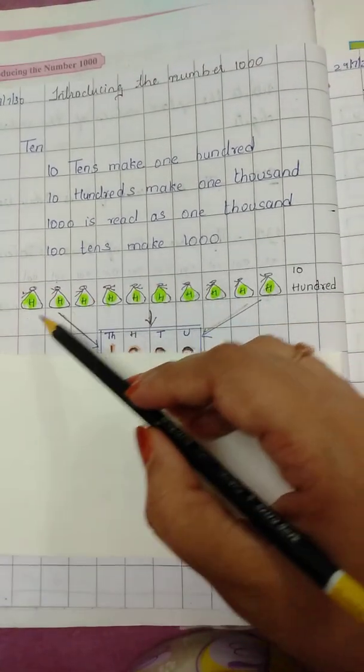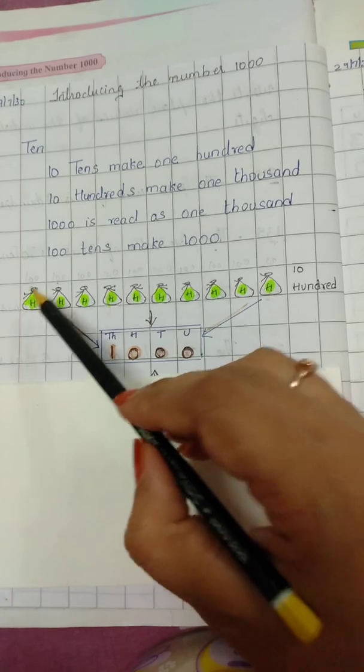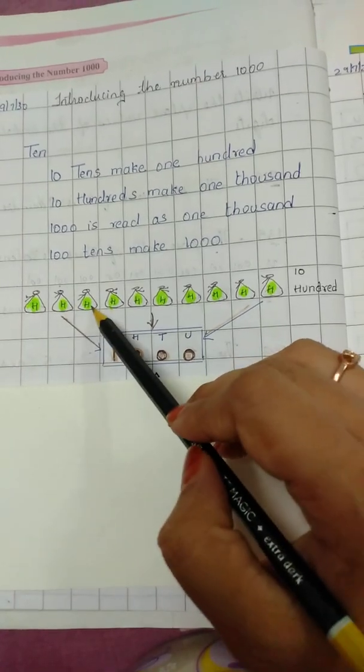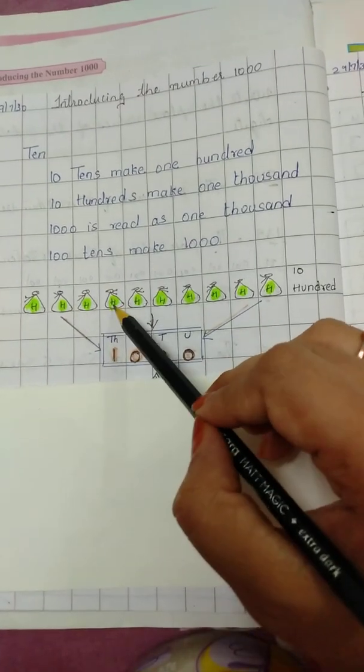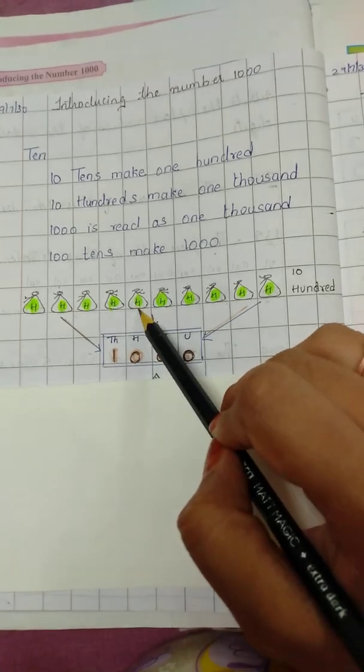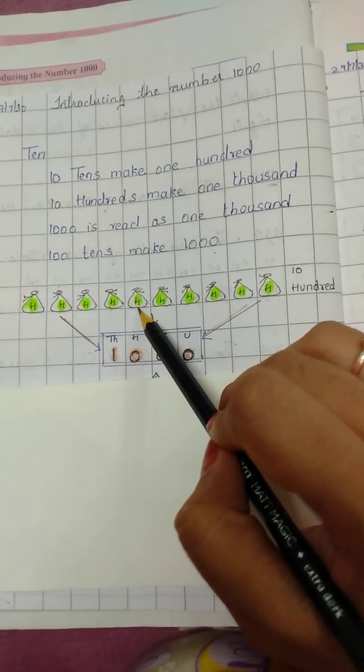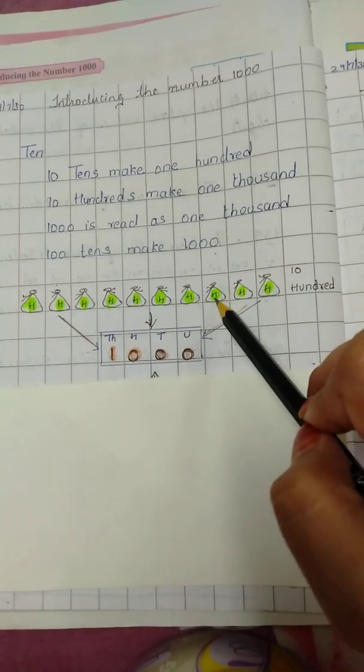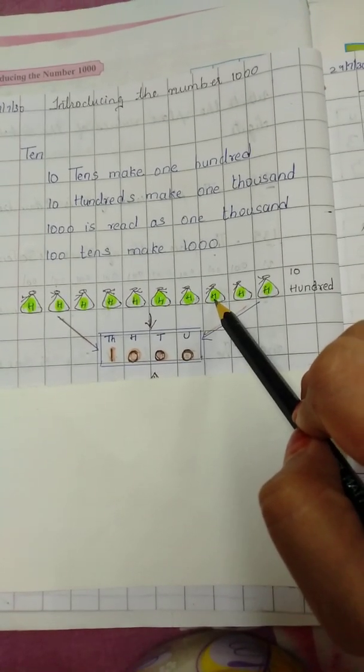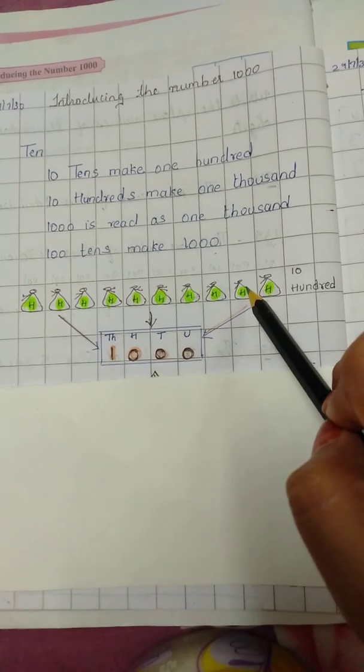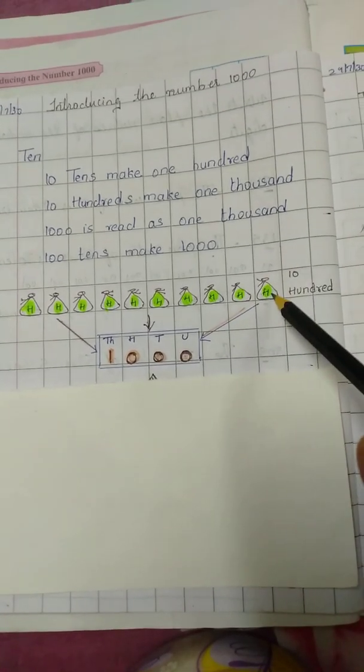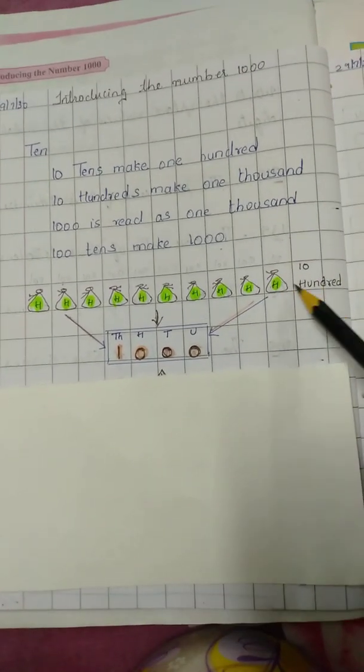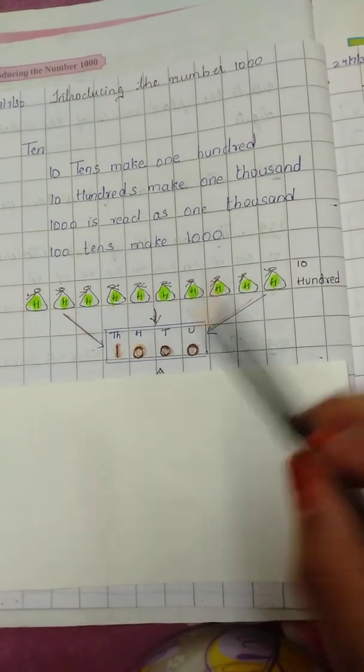Ab isko aap count karein. 100 plus 100 is 200, 200 plus 100 is 300, 300 plus 100 is 400, 400 plus 100 is 500, 500 plus 100 is 600, 600 plus 100 is 700, 700 plus 100 is 800, 800 plus 100 is 900, and 900 plus 100 becomes 1000.